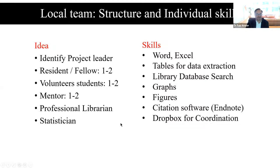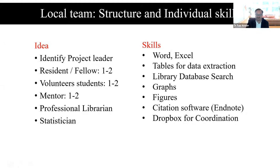If you want to put a team of students together, the ideal team should have four or five people: one or two students who could be residents or fellows with more clinical know-how, one or two very junior students, and one or two mentors. They should have access to a library and a statistician. Basic skills needed include: typing a paragraph in Word, using Excel, making tables, database searches, making graphs and figures, and using citation software. Our group predominantly uses EndNote, but you can use any. We typically rely on a Dropbox folder for coordination.